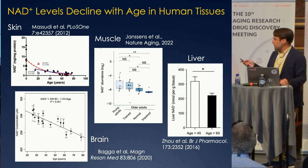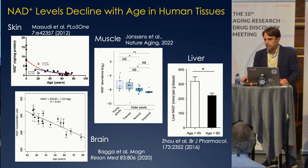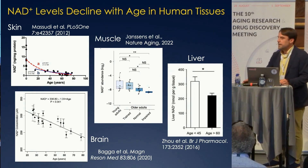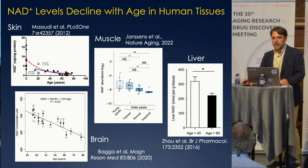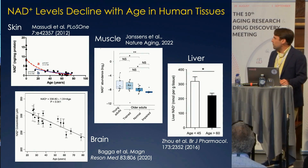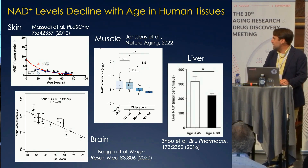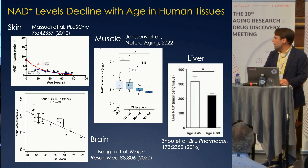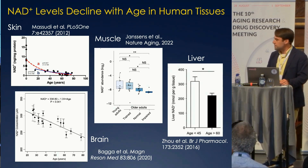The examples here are skin, brain, muscle, and liver — all of these in human data. This has been recapitulated many times in rodent models, and we are very interested in developing a lot more data to see exactly when and where NAD levels are falling in humans.